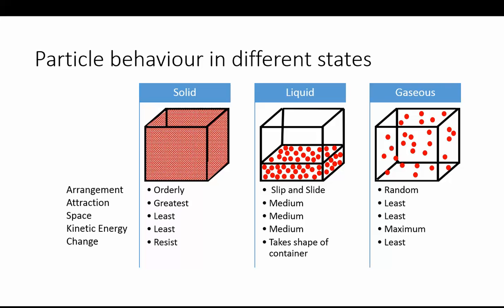So, what makes the state of matter different from each other? Their particle behavior. Of course, solids have an orderly arrangement of particles and they tend to have a maximum force of attraction within them. The space and kinetic energy is least, and they resist any force which tries to change their shape or their volume.